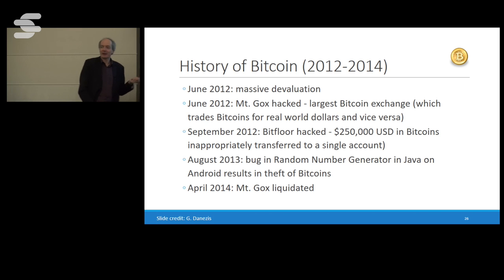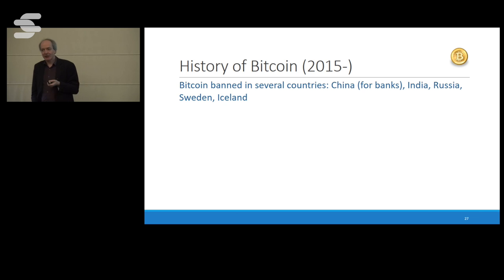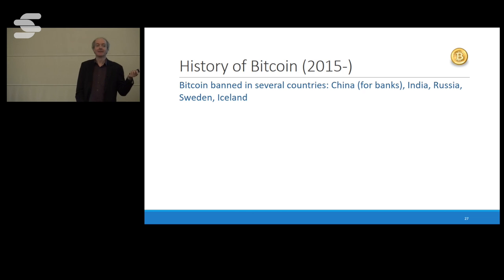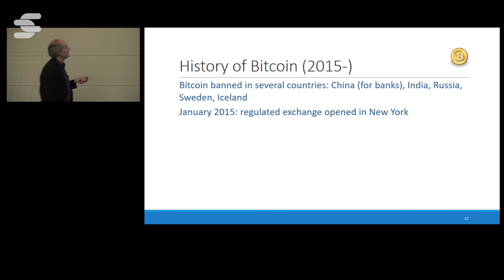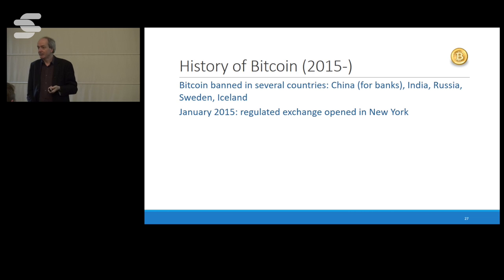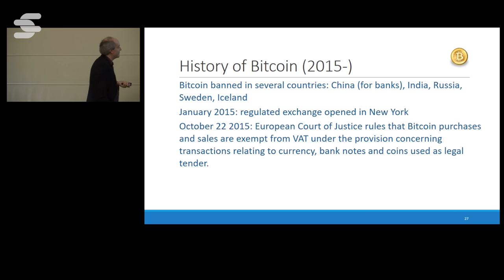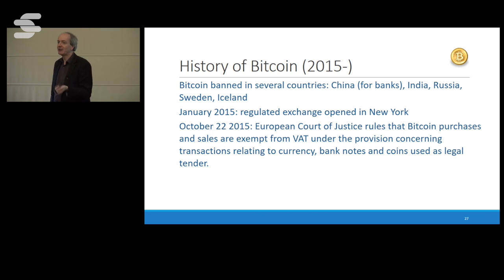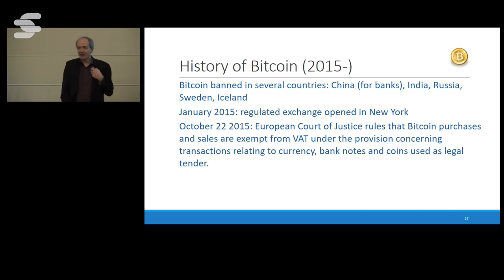Bitcoin has positive uses beyond ransomware. In 2015 a regulated exchange opened in New York, which meant you could use Bitcoin and not be a criminal — you had some protection from the US Federal banking regulator. The European Court of Justice ruled that Bitcoin is a currency and not a good, which means you don't pay VAT on Bitcoin transactions. In Europe, VAT can be 21%, so this is a big question. It's an important precedent: the European legal system now recognizes Bitcoin as a currency.